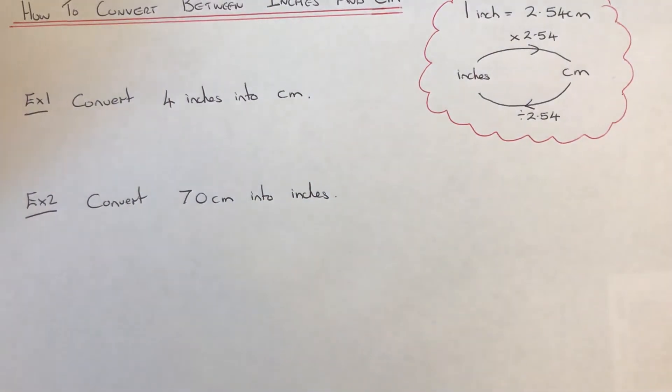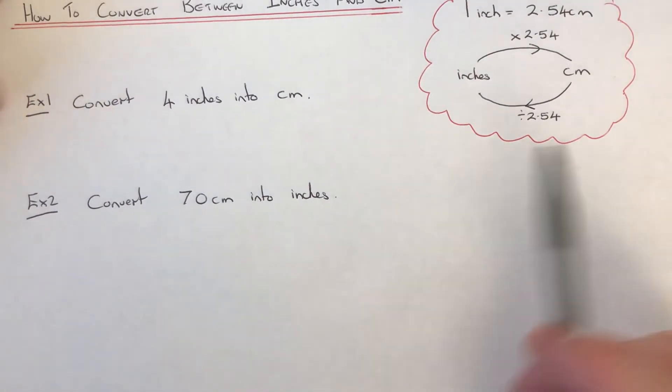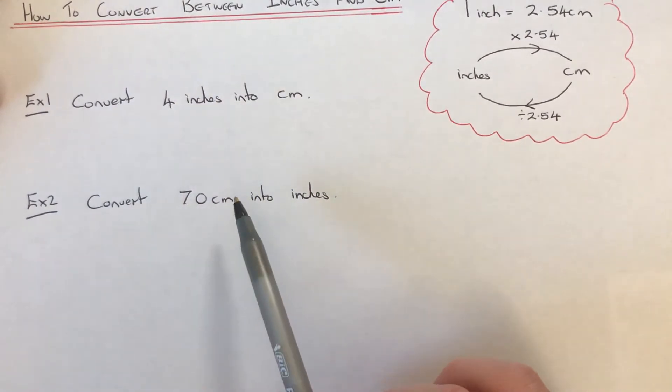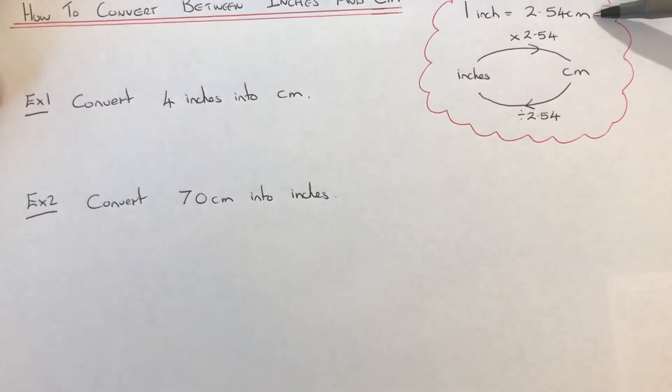Hi guys, welcome back. This is Maths 3000. Today I'm going to show you how to convert between inches and centimeters. So to do this you'll need to know the fact that one inch is the same as 2.54 centimeters.